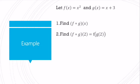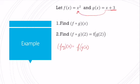Let's practice combining some functions. Say I have f of x equals x squared and g of x equals x plus 3. If I want to find f composed with g of x, I like to rewrite that as f of g of x, because that reminds me I need to substitute g of x in for x. That gives me my function f of x, which is just the basic quadratic, and I plug in g of x for x — so I have x plus 3, squared.